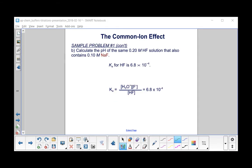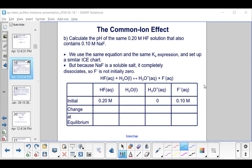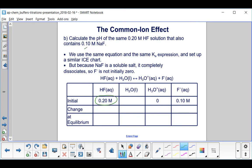Let's continue this same sample problem, but add the common ion effect and see what does that do to the pH. Calculate the pH of the same 0.2 molar HF solution that also contains 0.1 molar NaF. The Ka for HF is still the same, and my Ka expression from the previous part is still the same. We use the same equation and the same Ka expression as before and set up a similar ICE chart. But what's the difference? We have 0.2 molar HF and 0.1 molar NaF.